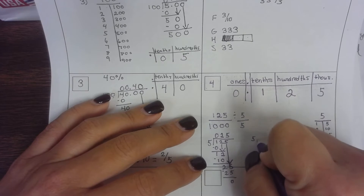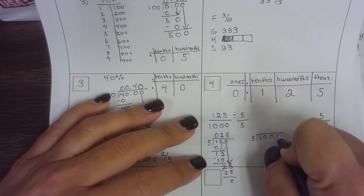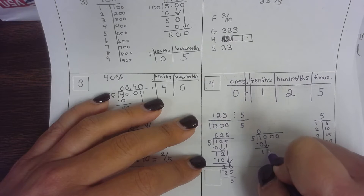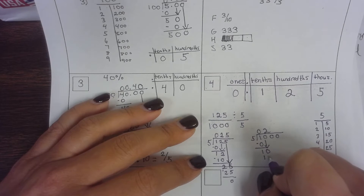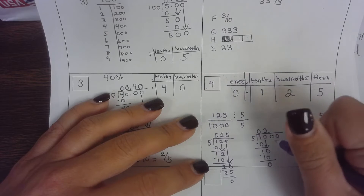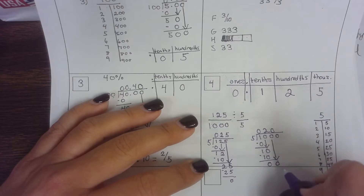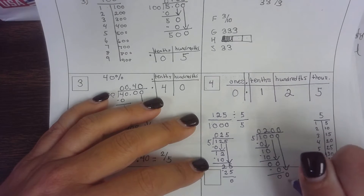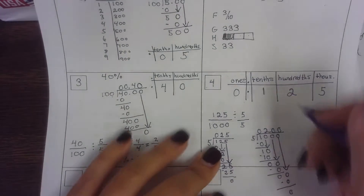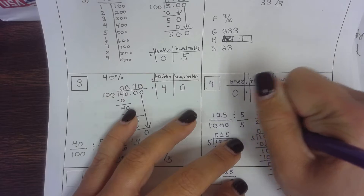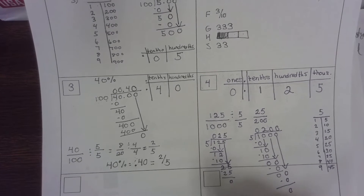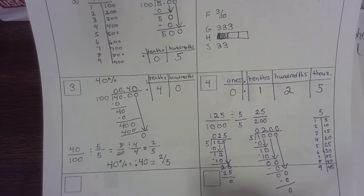I'm going to do the same thing for the 1,000. I'm not skipping any numbers and I'm keeping everything lined up, bringing down every number. Every number is accounted for — I'm not stopping just because everything is zeros. That gives us 25 over 200. I have a five and a zero, so that's my clue I can divide by fives again. What I do on top I must do on the bottom.